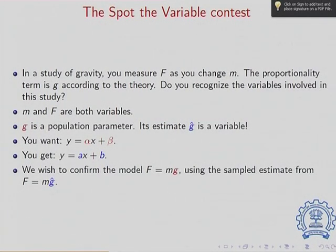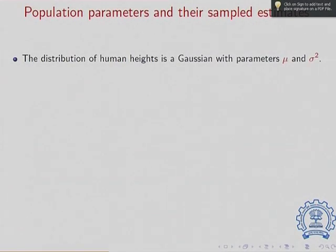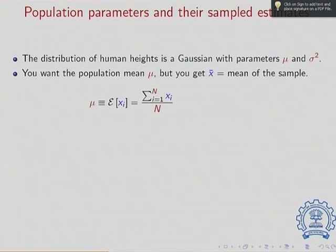To summarize: you are evaluating model f = m·g, but the experiment gives you g-hat — your estimate of g. The distribution of human height is Gaussian with parameters µ and σ². It is reasonable to ask: for the entire population, if the average height is µ, how do I estimate µ? You look at the people in your room, collect their heights, and come up with an estimate of µ. Similarly, you estimate the true variation for the entire population by looking at your current collection of heights.